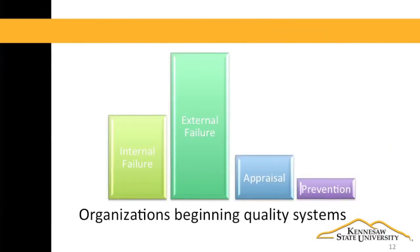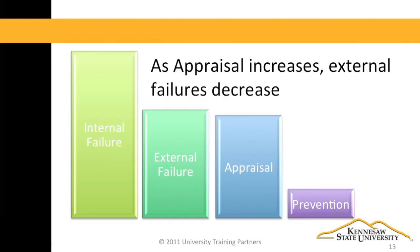The mix of these costs will change as an organization implements and matures a quality system. An organization just beginning a quality system will probably have very high external failure costs — in fact, that may be why they started their quality system. As they try to stop external failures, they will probably increase inspection, so appraisal costs will go up. Defects are still produced but they're caught before they go to the customers, so external failures go down and internal failures may go up. This is still an improvement.